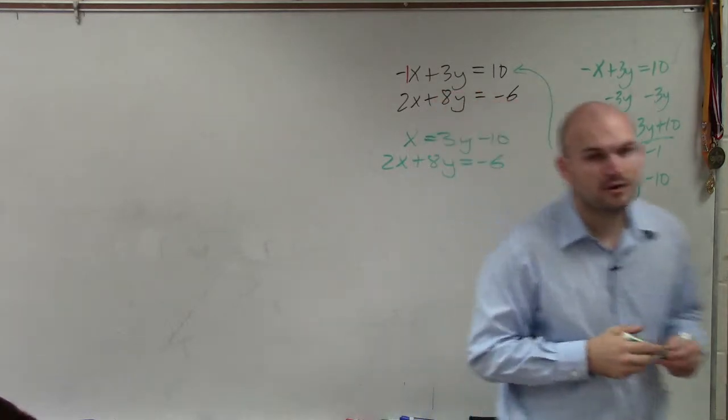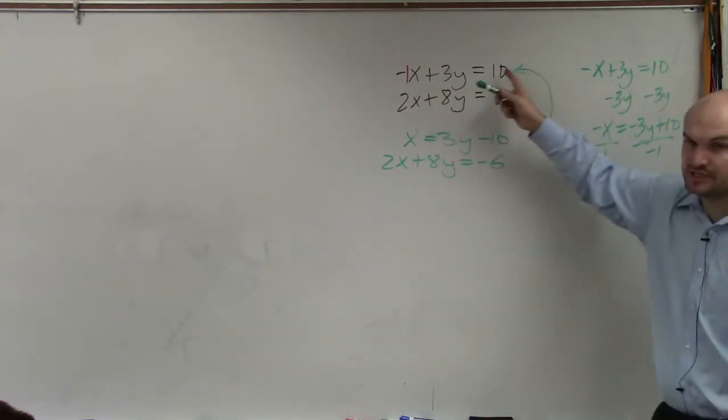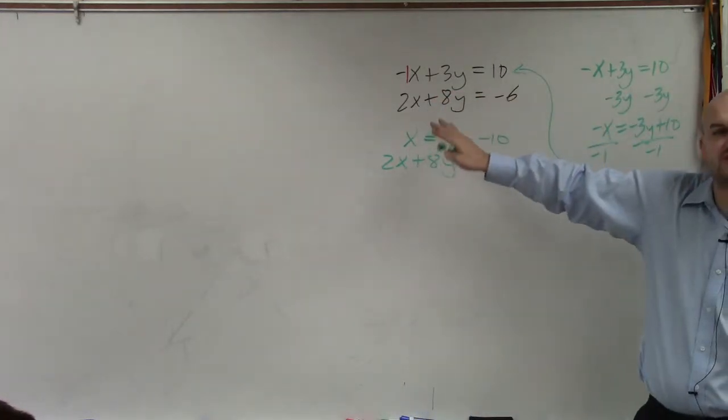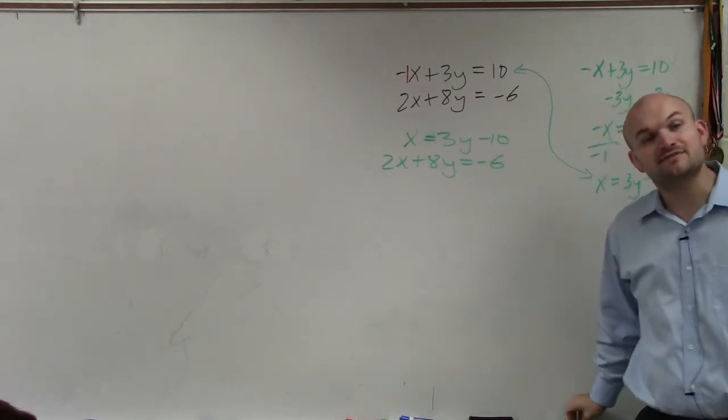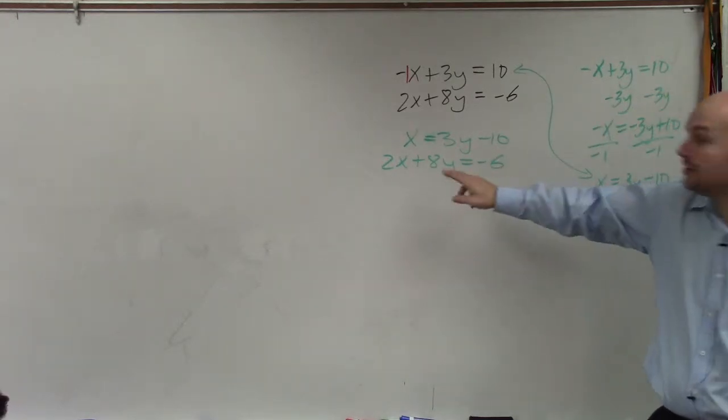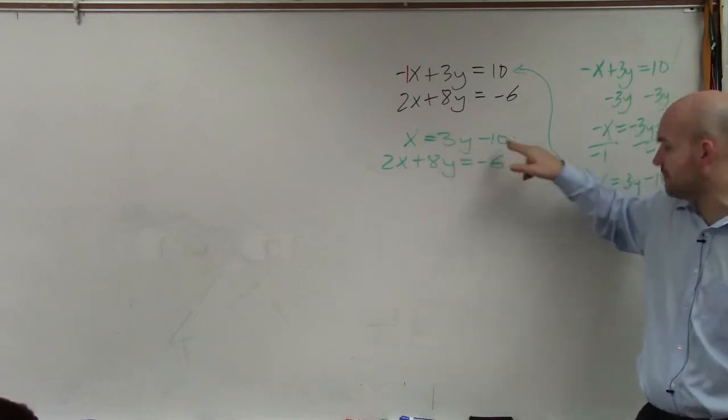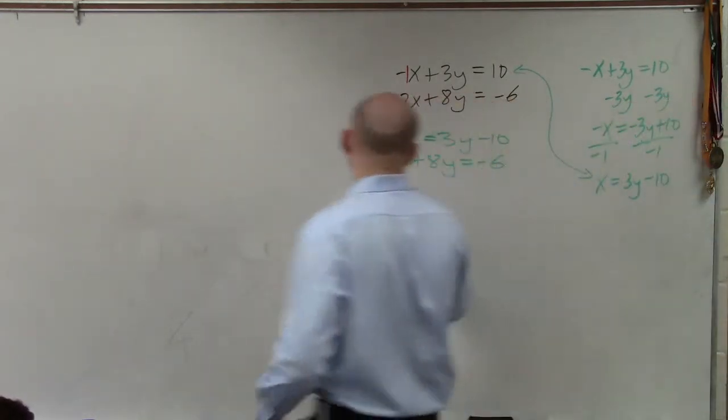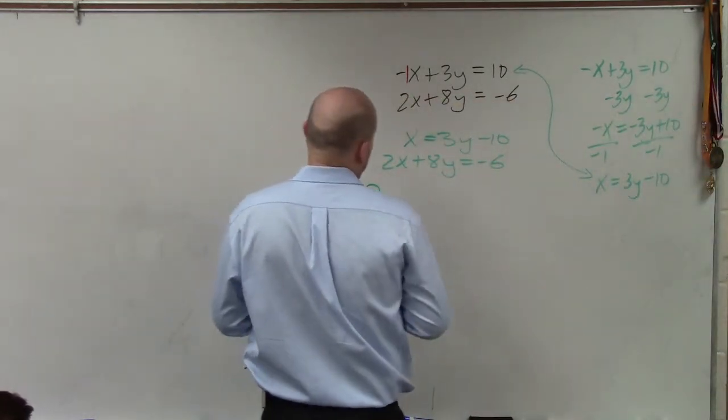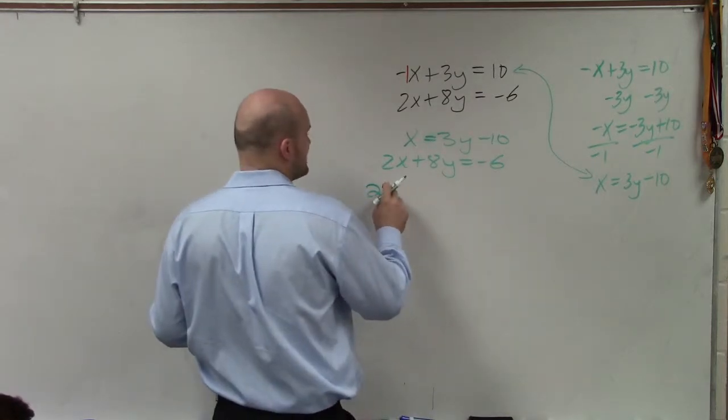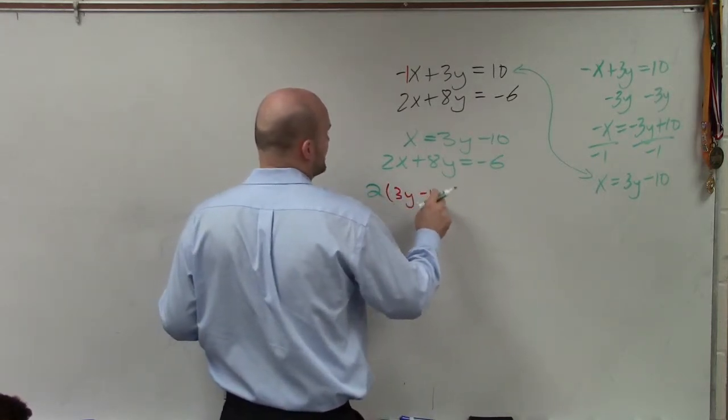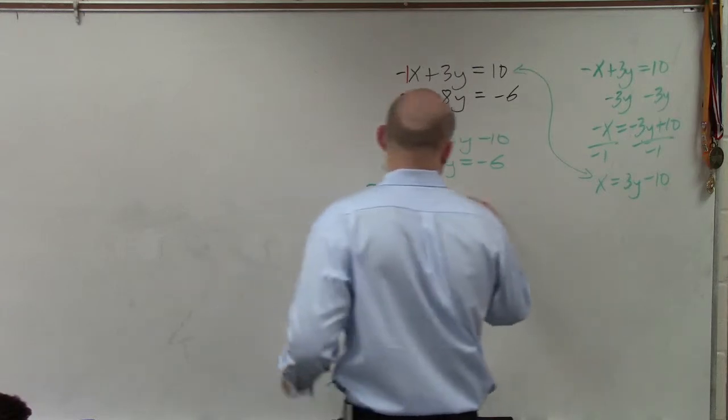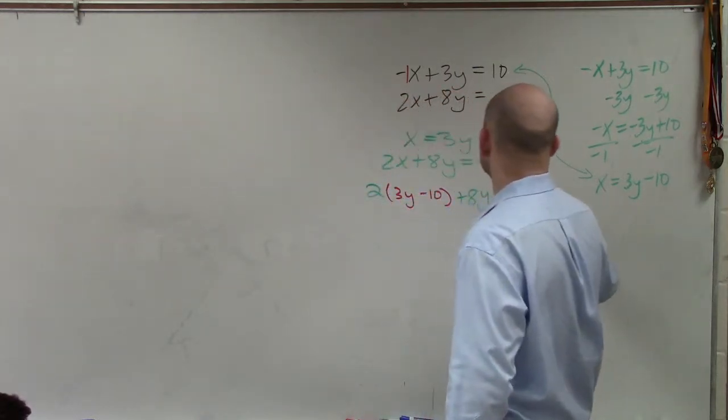So now, by replacing these equations, now I have an equation that is solved for a variable. And so if I have an equation that is solved for a variable, I can replace my variable x with 3y minus 10. So I'll write 2. Instead of a 2 times x, it will be 2 times 3y minus 10 plus 8y equals negative 6.